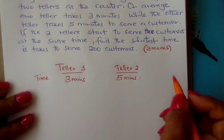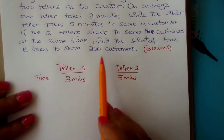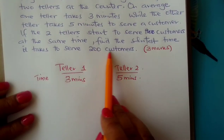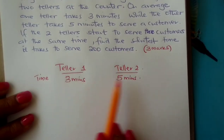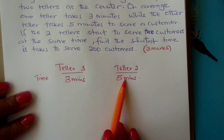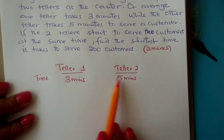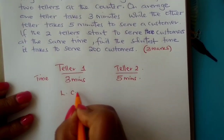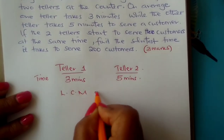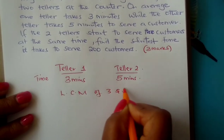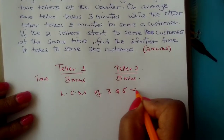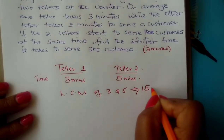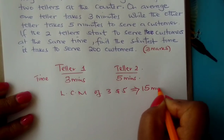For you to be able to know how long they will take to serve 200 customers, the first thing is to consider the same duration of time. So you first get the LCM of 3 and 5. The LCM of 3 and 5 is 15, so 15 minutes.